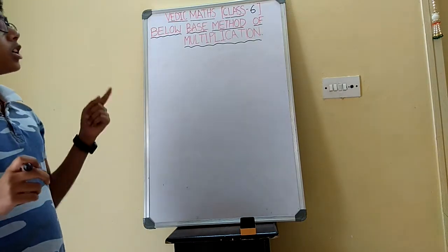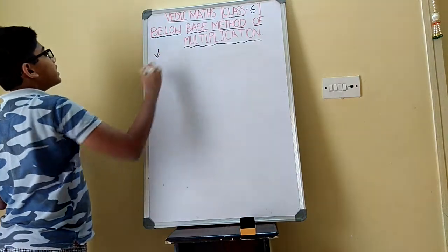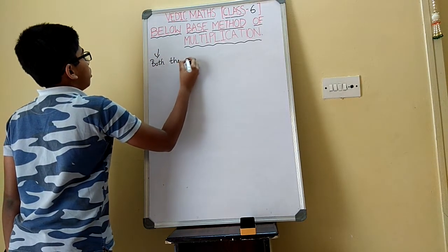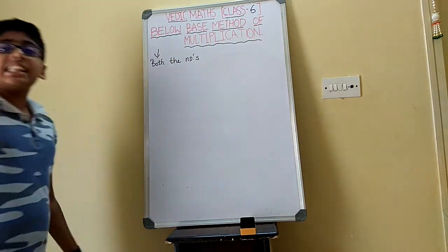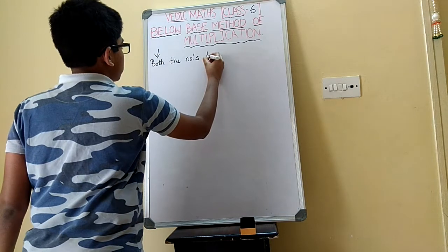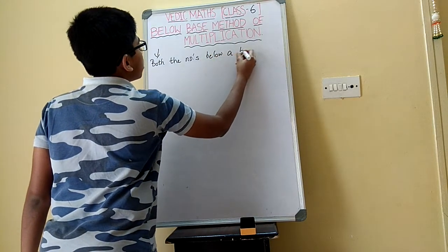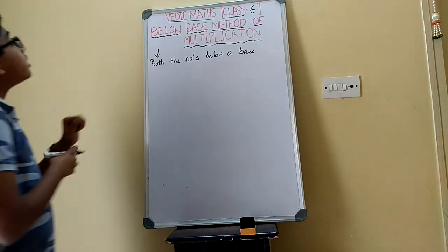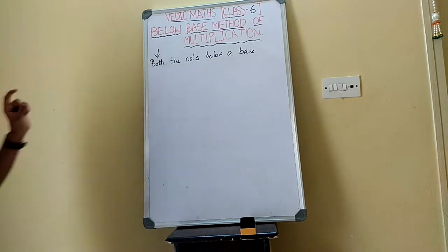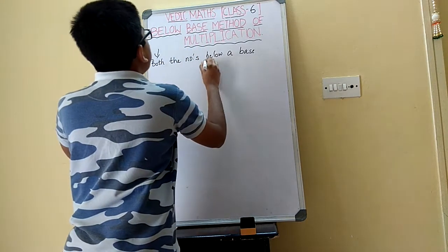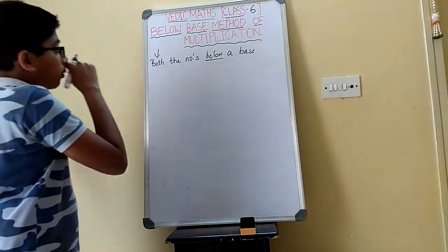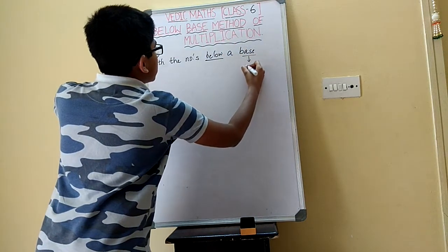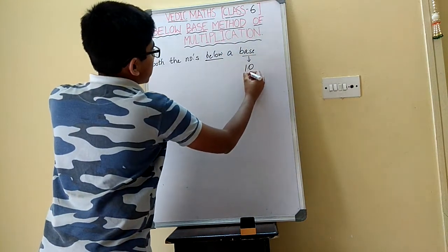So today's topic is the below-base method of multiplication. In this method, you need to have both numbers less than a base — below a base. In the previous video we had above-base, where both numbers should be above a base. Here, both numbers should be below the base. We already know what the base is.